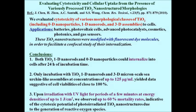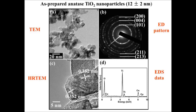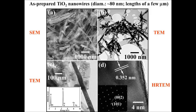Our lab actually makes these structures: spherical nanoparticles with diameters of 12 ± 2 nanometers, single crystalline spherical TiO2 particles. We also make TiO2 nanowires with diameters of 80 nanometers and lengths of a few microns, synthesized in large quantities through a hydrothermal process. We can also make three-dimensional micron-scale assemblies of anatase TiO2, where the constituent nanowires of these 3D assemblies are also single crystalline in and of themselves.